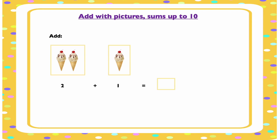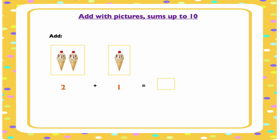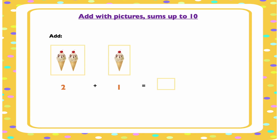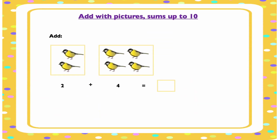In this picture we have two groups of ice creams. We have two in this group and one in this group. How many ice creams are there altogether? We have to find out by adding them together. Let's do that: one, two, three. So the sum of two and one is three.